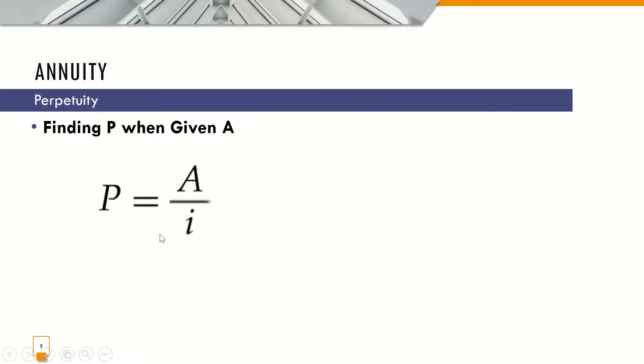And for the last, the Perpetuity. Finding P when given A, P equals A over I. That is the simplest form or the simplest kind of annuity, the Perpetuity.